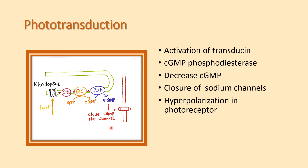The receptor potential is transmitted to the bipolar cells and then to the ganglion cells, traveling through the visual pathway to reach the visual cortex. This is the complete process of phototransduction.